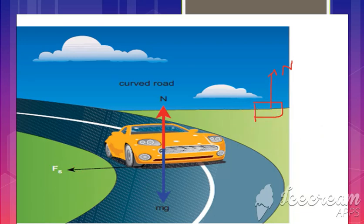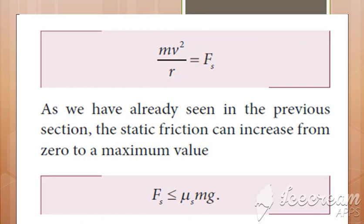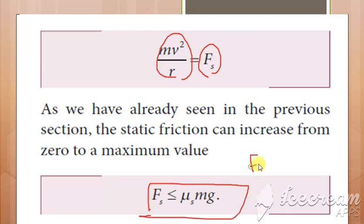We are going to take the formula for frictional force. The frictional force fs equals the centripetal force, so fs = mv²/r. From the frictional force formula, fs = μₛ × N. From the diagram, since the normal force acts upward and gravitational force acts downward along the y-axis, we write N = mg. So substituting, we get fs = μₛ × m × g.